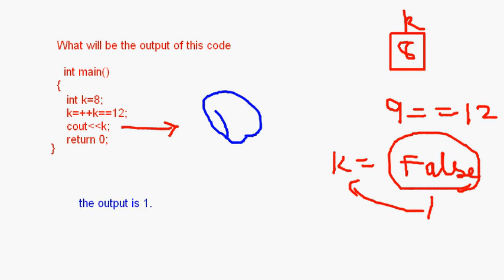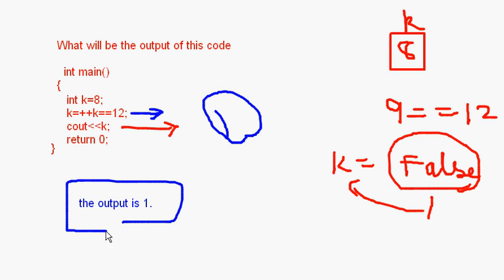The key statement is: k = (++k == 12). There is an assignment operator, k equals what. ++k increments k to 9. That is equated with 12 — it is a logical comparison that gives either true or false. Since 9 is not equal to 12, it gives false, and false gets stored into k. So when you print cout k, the output is 0.